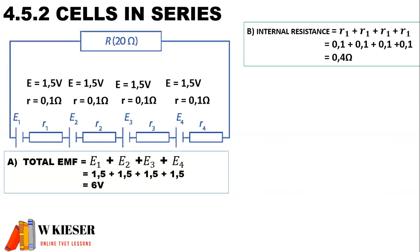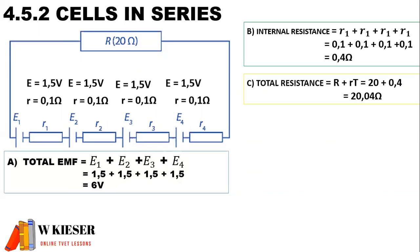To calculate the internal resistance, it is the sum of the internal resistance for each cell. Therefore, the total internal resistance is 0.4 ohms. To calculate the total resistance of the circuit, we factor in the external load resistance of 20 ohms. Therefore, 20 ohms plus the total internal resistance of 0.4 ohms gives a total resistance of 20.4 ohms.